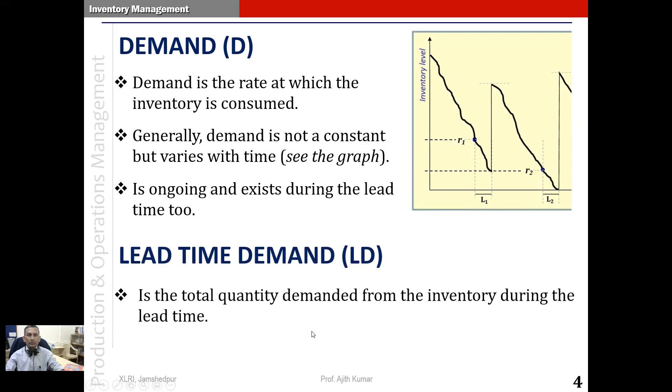The fourth term combines the idea of lead time and demand together as lead time demand. Lead time demand refers to the total quantity demanded from the inventory during the lead time. In other words, when we place the order, that's when the lead time begins, the level of inventory was at R1. And when we receive the replenishment, that's when the lead time ends. The quantity of the inventory is somewhere here.